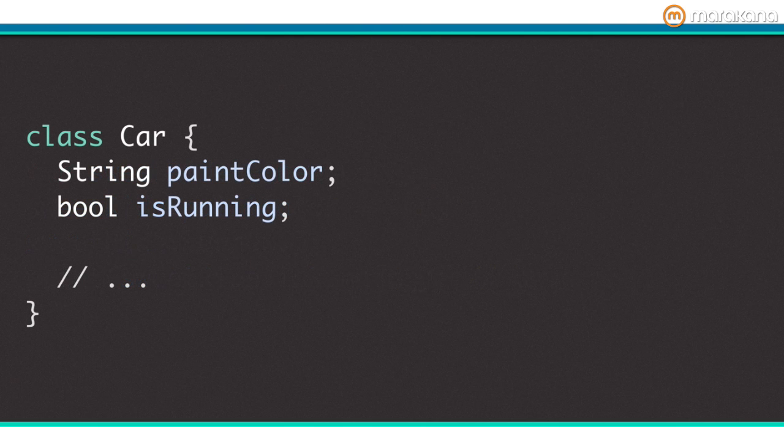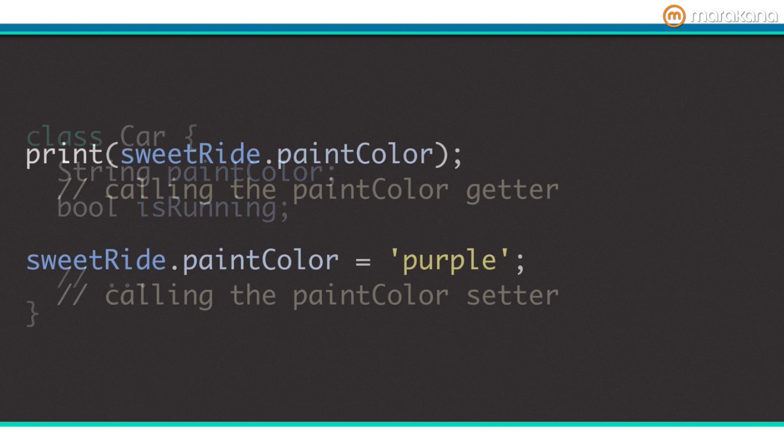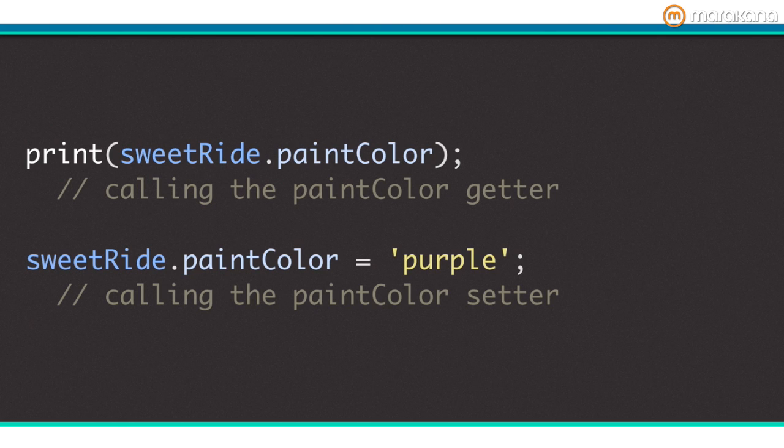Let's dive into fields or instance variables. Here is a reminder of the Car class with its two fields. All instance variables have an implicit getter. This means that even though it looks like you're accessing a field directly, you're actually going through a generated getter method. Here's an example.